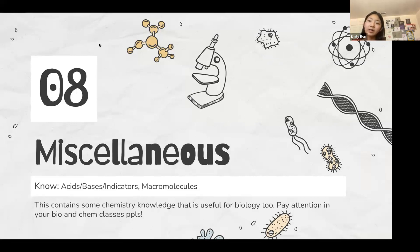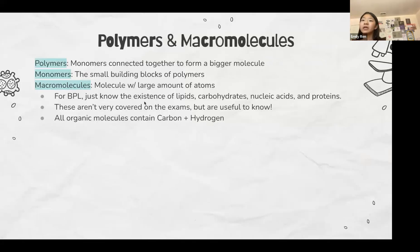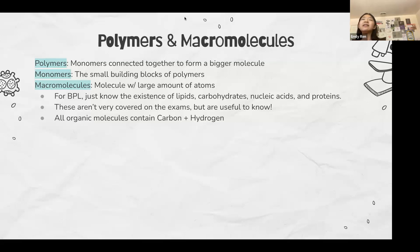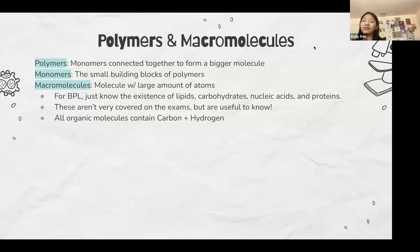Miscellaneous is basically everything we haven't covered before. Usually there is a question asking you to design an experiment. You need to know the scientific process and how to write a hypothesis — typically 'if this, then this, because this' — and list independent variables, dependent variables, and at least three constants. Polymers and macromolecules aren't tested a lot but it depends on the test.